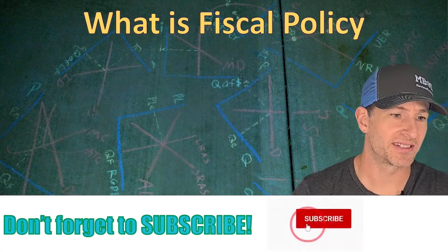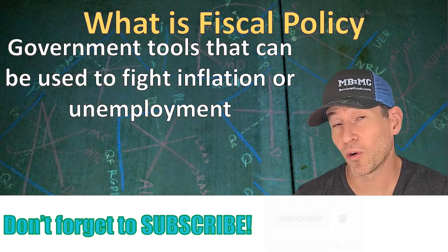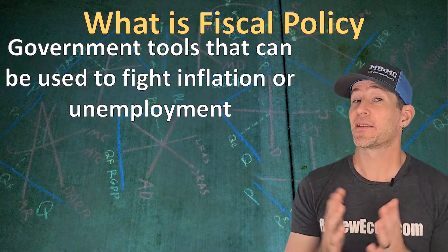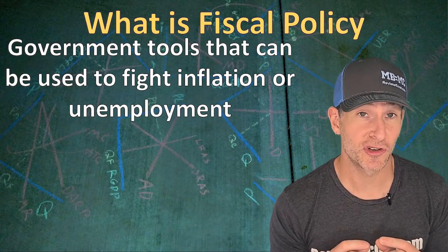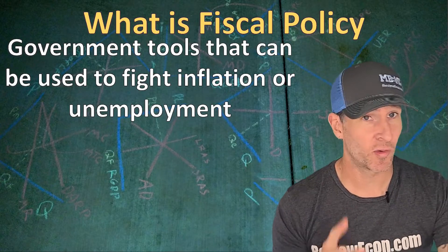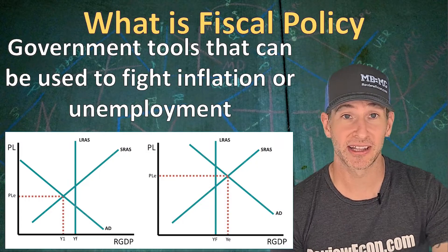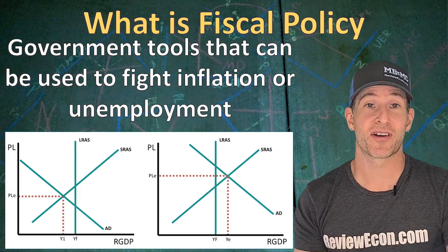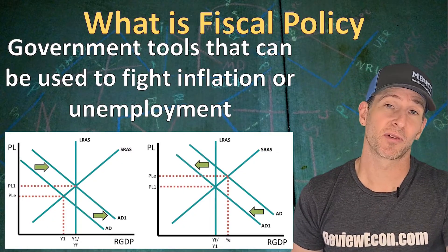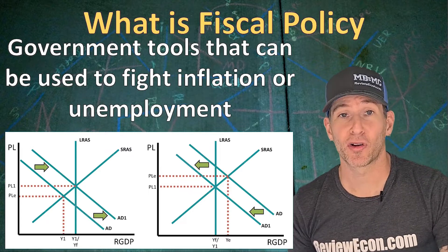First of all, we need to know what fiscal policy is. Fiscal policy is government tools that can be used to fight unemployment or inflation. Those are two of our macroeconomic goals: full employment and stable prices. The President and Congress can help us reach those two macroeconomic goals through changes in taxes and government spending. If in the AS-AD model we are not at long-run equilibrium — perhaps we have a recessionary gap or an inflationary gap — then properly designed fiscal policy can get us back to long-run equilibrium, where inflation is low and the natural rate of unemployment equals the current rate of unemployment.